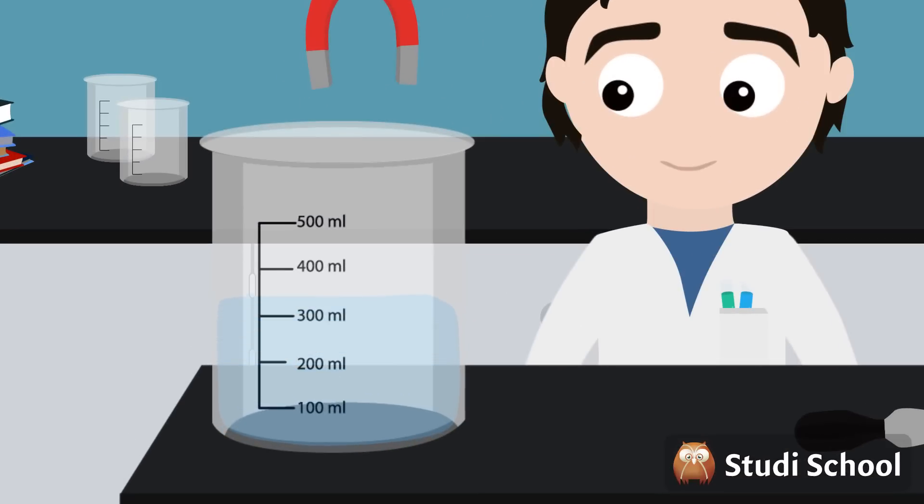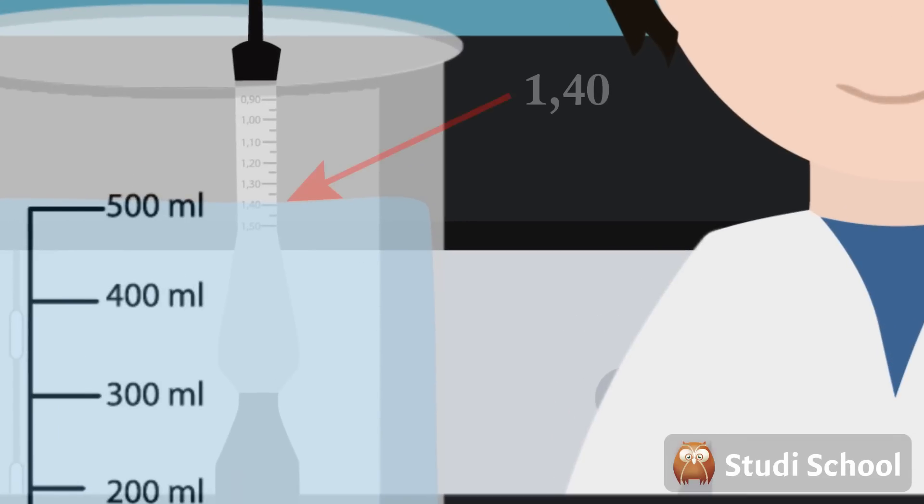we pour the liquid into a graduated cylinder. Then we lower the hydrometer into the liquid until it floats freely. We then take note of the point at which the surface of the liquid touches the stem of the hydrometer.